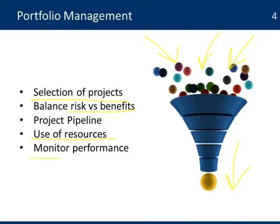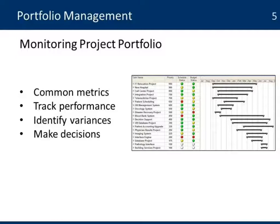Portfolio management also looks at monitoring the performance of all those selected projects and how they are contributing to the long-term goals of the organization. Monitoring the project portfolio requires a common view of all those projects — common metrics by which the organization can measure the performance of all of them. It doesn't need to be complicated; it could be very basic indicators that the organization can track across all projects, identify variances, identify where projects may be late, not spending enough money, having challenges or delays, and help make decisions about where to focus support.